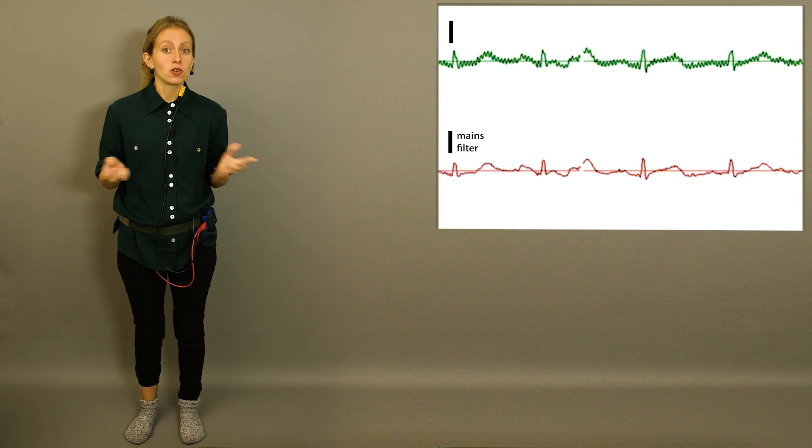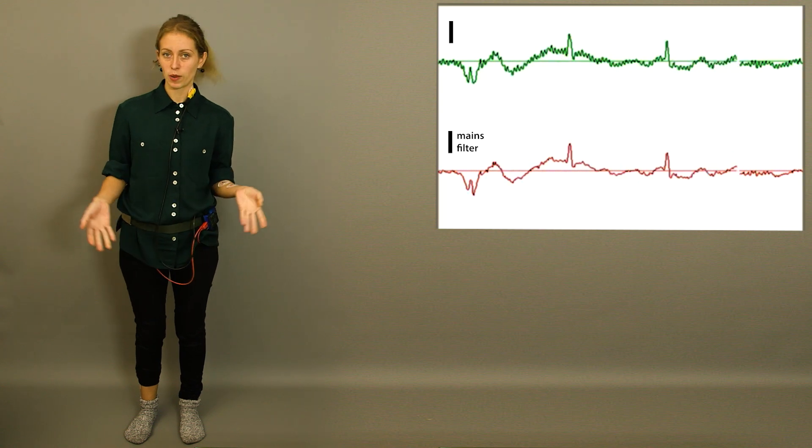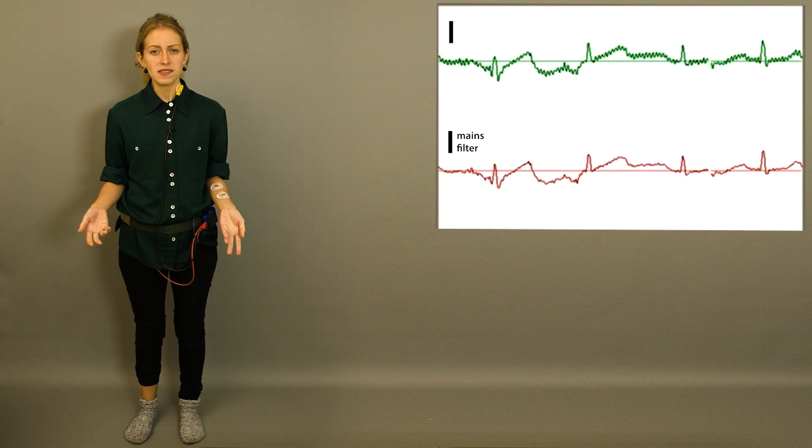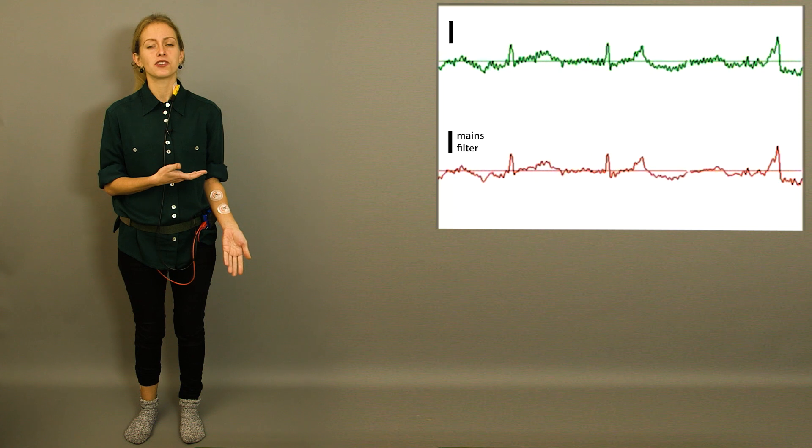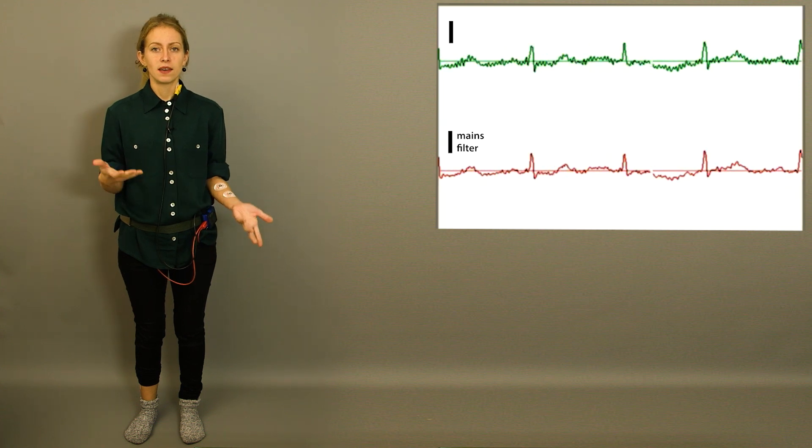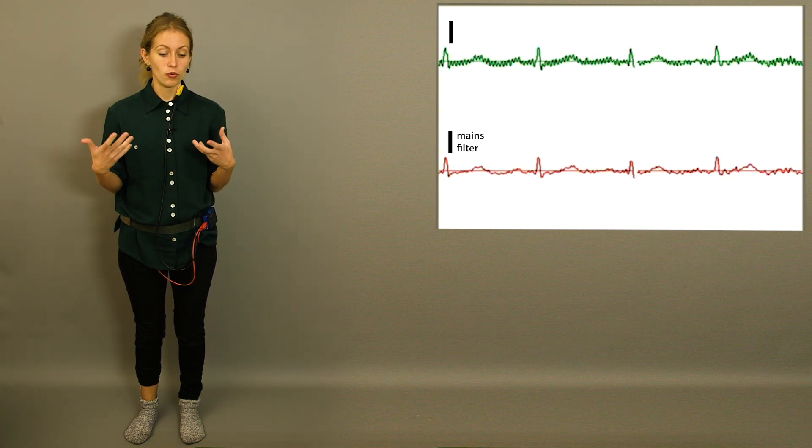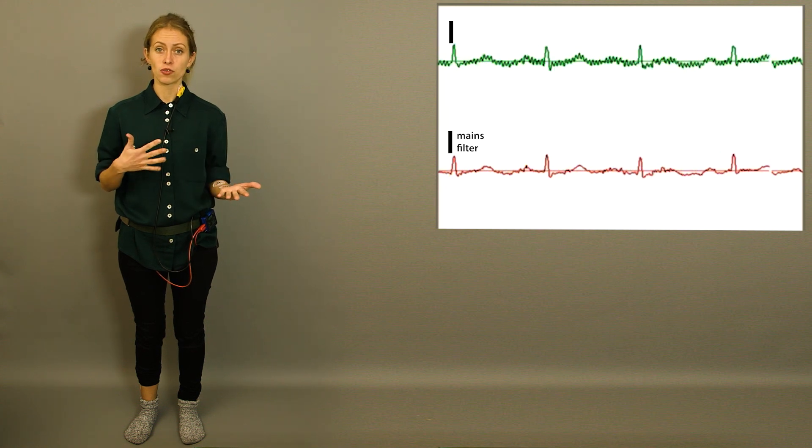Someone though could conclude, well if it doesn't matter where I put ground on my body, can I not just place it at the same place where the negative electrode is, so then I have both ground and negative under the same electrode.